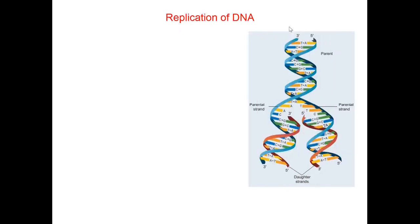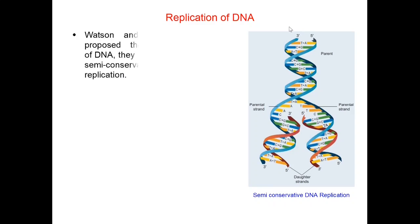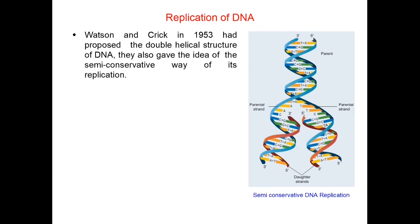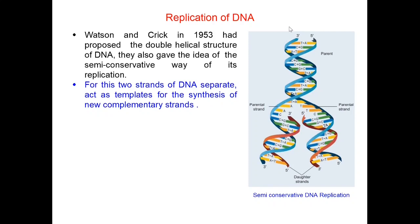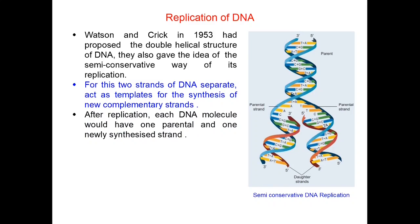Let us begin today's topic: Replication of DNA. Look at the picture here — this is showing semi-conservative DNA replication. Watson and Crick in 1953 proposed the double helical structure of DNA and also gave the idea of the semi-conservative way of its replication. The two strands of DNA separate and act as templates for synthesis of new complementary strands. After replication, each DNA molecule has one parental and one newly synthesized strand, which is why it is called semi-conservative replication.